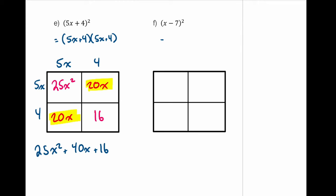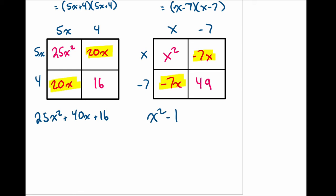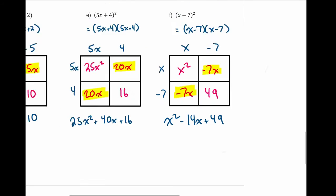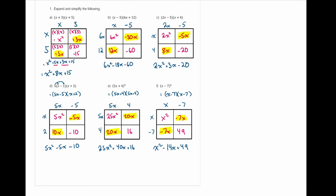Finally, example (f): (x − 7) squared. Recognize that squared means multiplied by itself, so (x − 7)(x − 7). Remember to include the negative in front of the 7. Multiply columns and rows in the box. The two diagonals are like terms and combine to give x² − 14x + 49. That's the box method for expanding and simplifying binomials. Whether you choose the box method or FOIL is up to you — both work equally well.